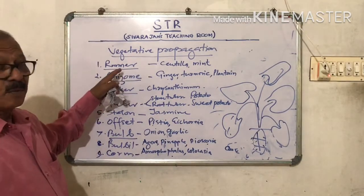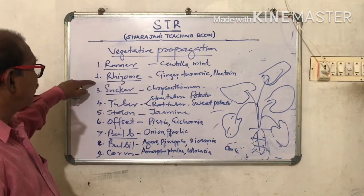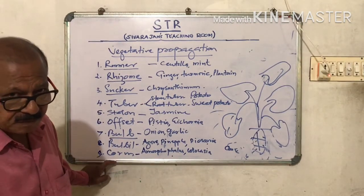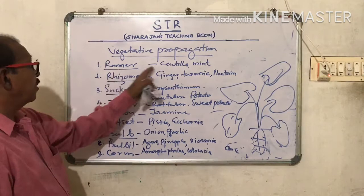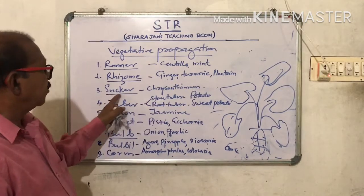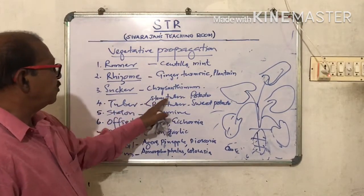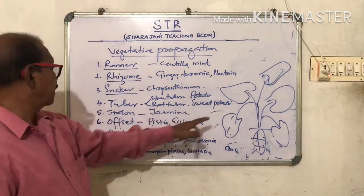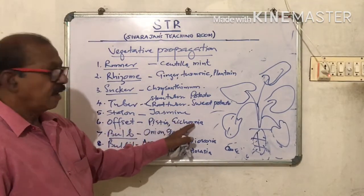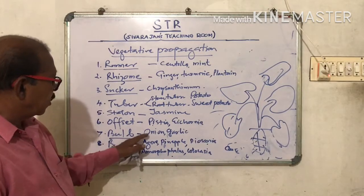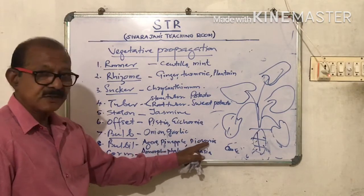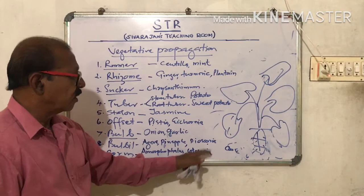So what are the different Vegetative Propagules? Runner, Rhizome, Sucker, Tuber, Stolon, Offset, Bulb, Bulbil, Corm, etc. Runner example: Centella and Mint. Rhizome example: Ginger, Turmeric, and Plantain. Sucker example: Chrysanthemum. Tuber: stem tuber example — Potato; root tuber example — Sweet Potato. Stolon example: Jasmine. Offset example: Pistia, Eichhornia, etc. Bulb example: Onion, Garlic. Bulbil example: Agave, Pineapple, Dioscorea. And Corm example: Amorphophilus, Collocasia, etc.